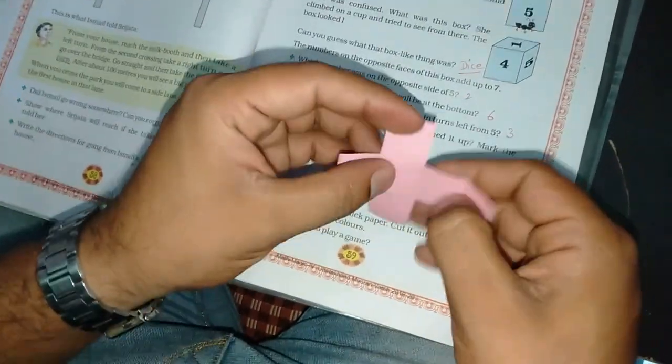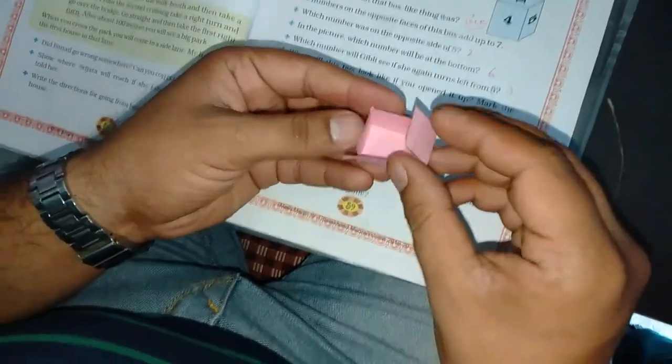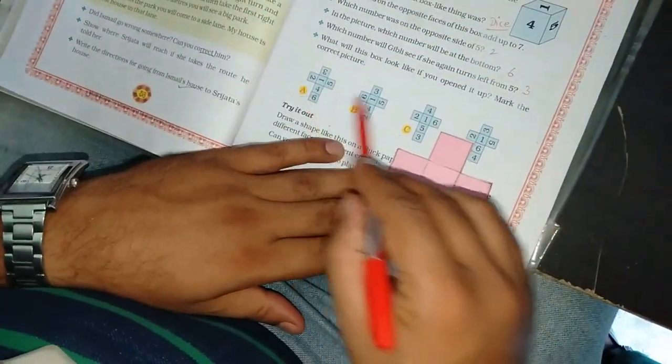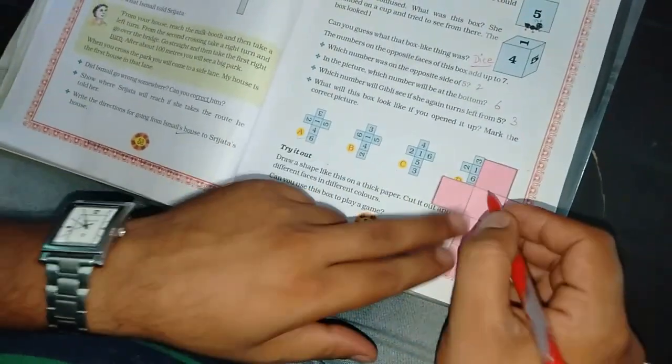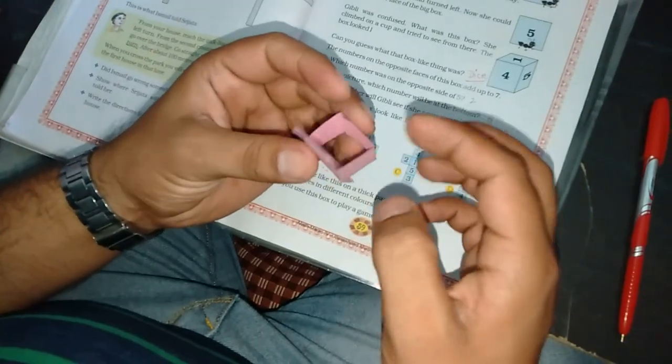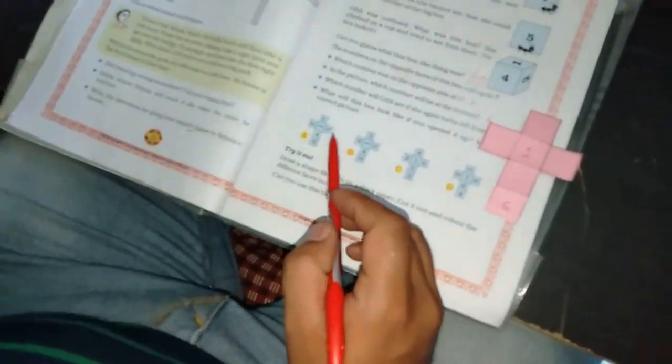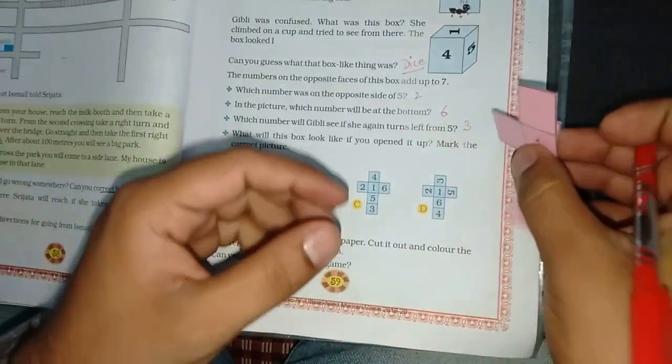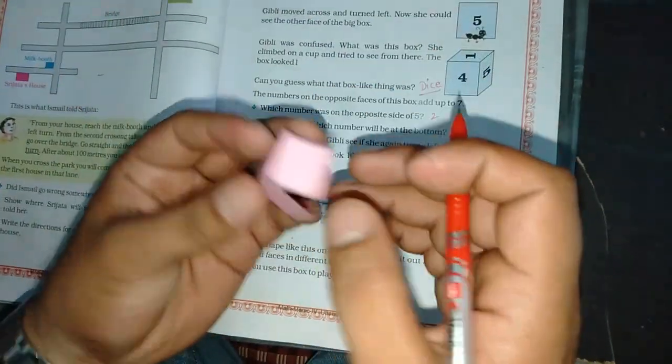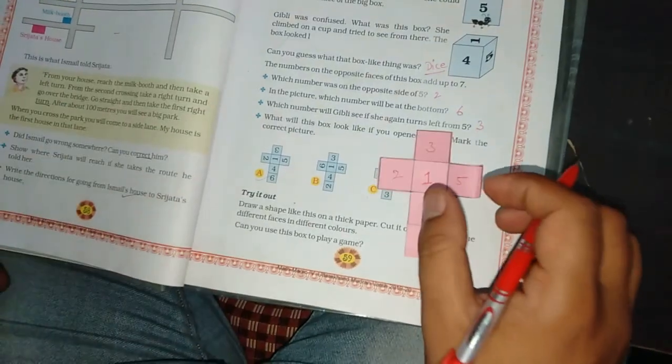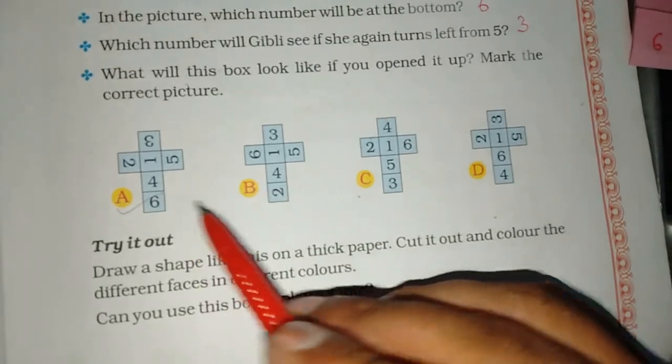Is this dice? Yes sir. Let me tell you. We can write numbers on it. One should be in the center. Now, what should be on the opposite side? Here. One and six. Is it clear? Yes sir. What should be on the opposite side? Three. Here. Two. What should be on the opposite side? Five. Clear? Yes sir. You should have 4. A. Which is correct? A.